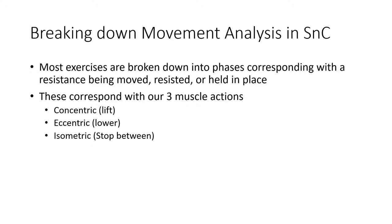For example, with the bench press, we would start in an isometric position where the elbows are extended. We go through an eccentric phase where it lowers the resistance down to the lifter's chest. There's an isometric transition where the bar stops moving, and then it begins to lift in the concentric phase. We work through each phase because the phase determines the muscle contraction type as well as which muscles are working within that action.